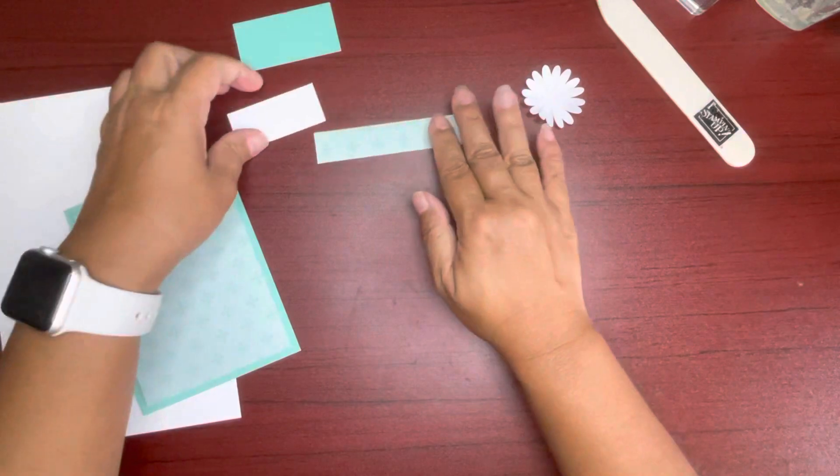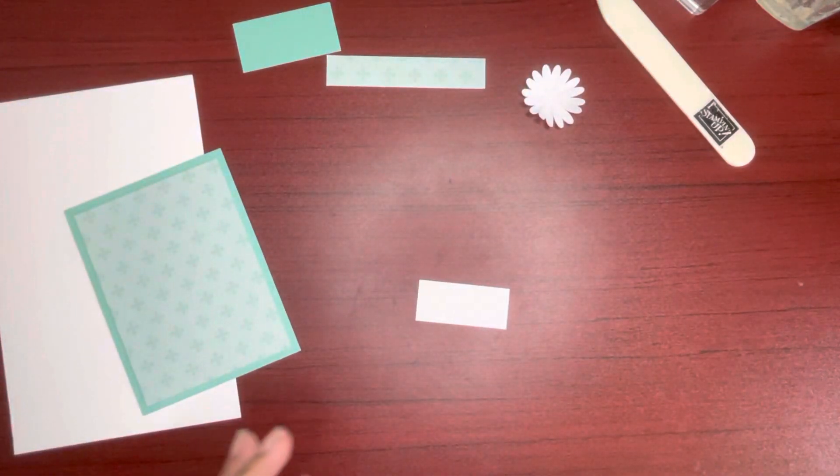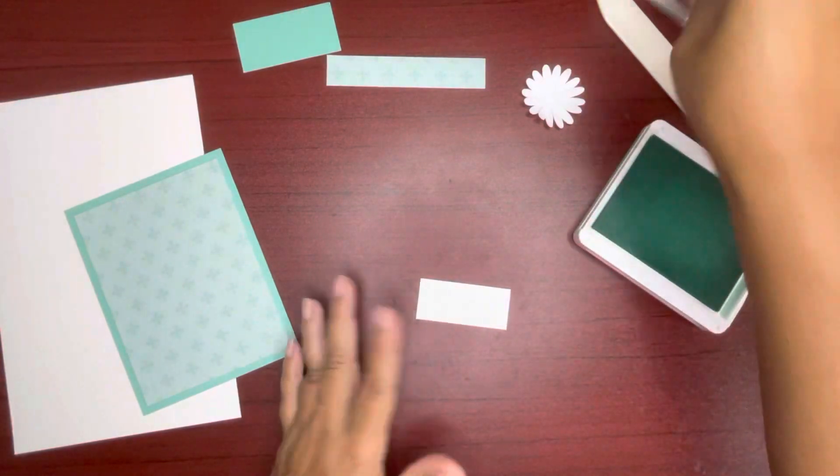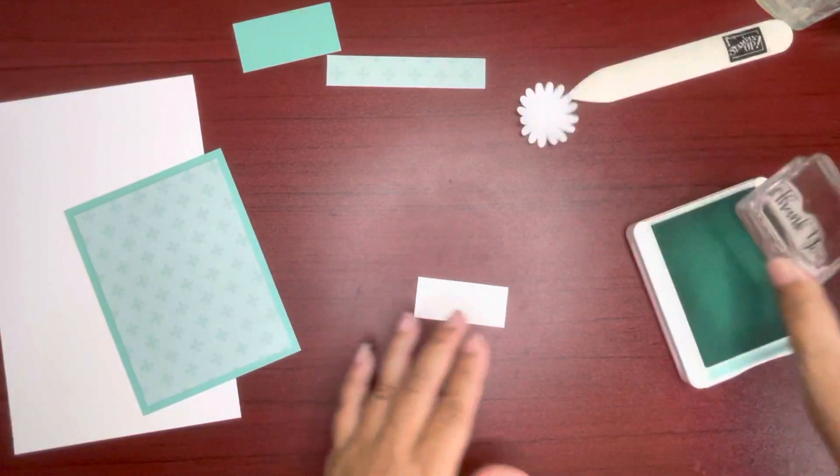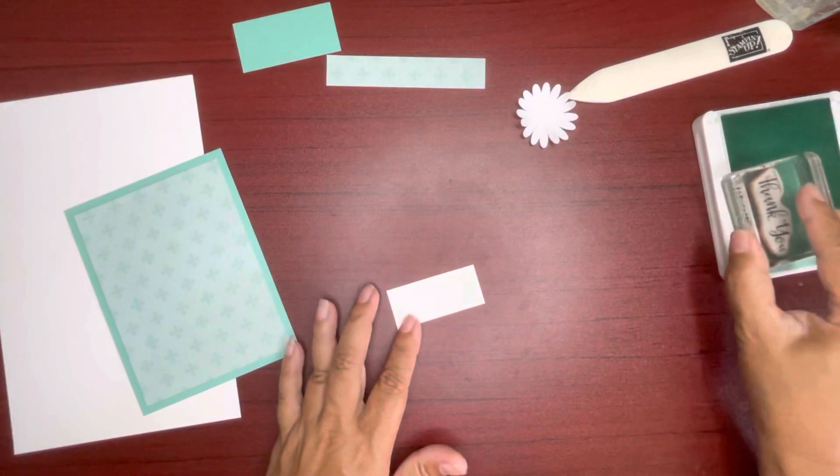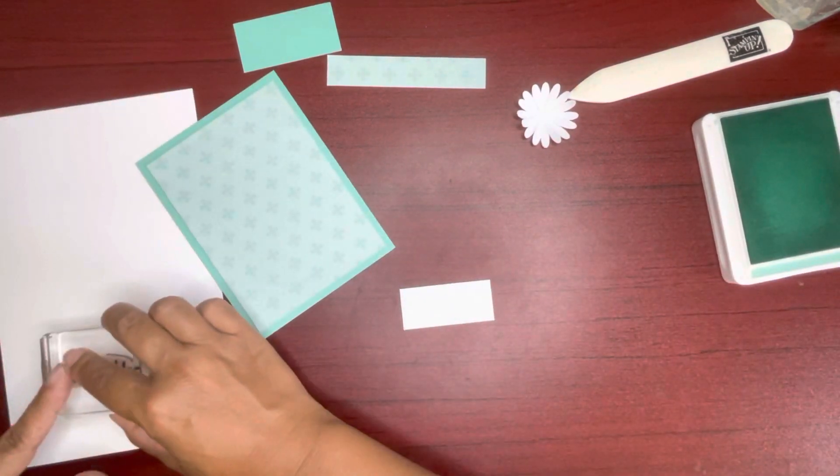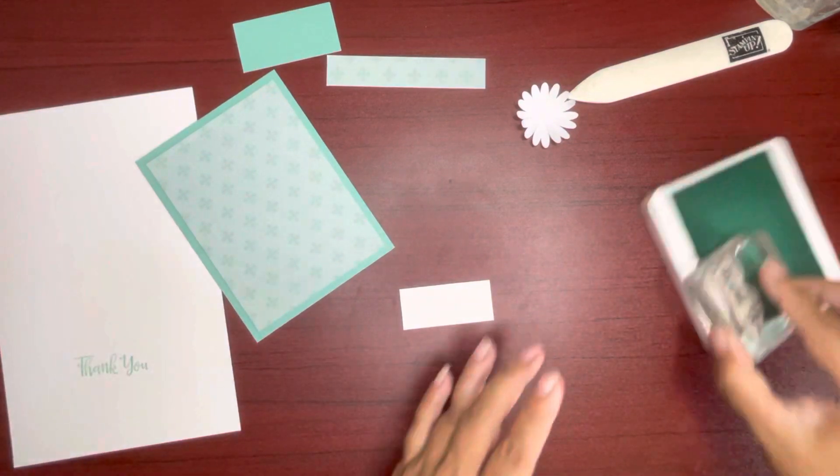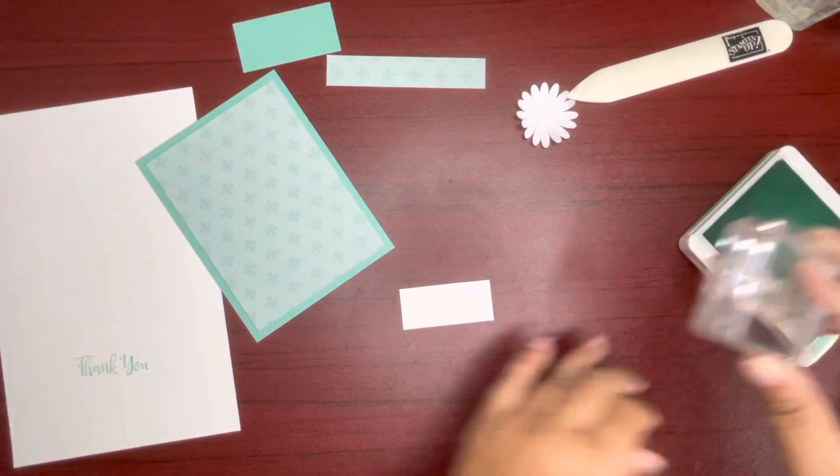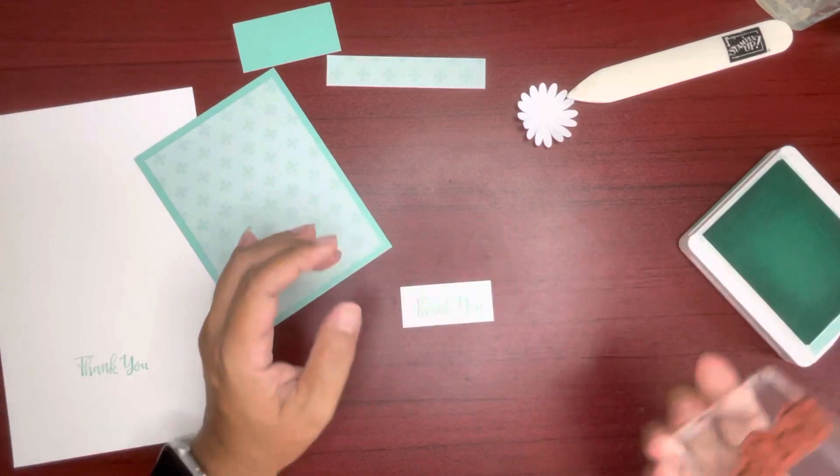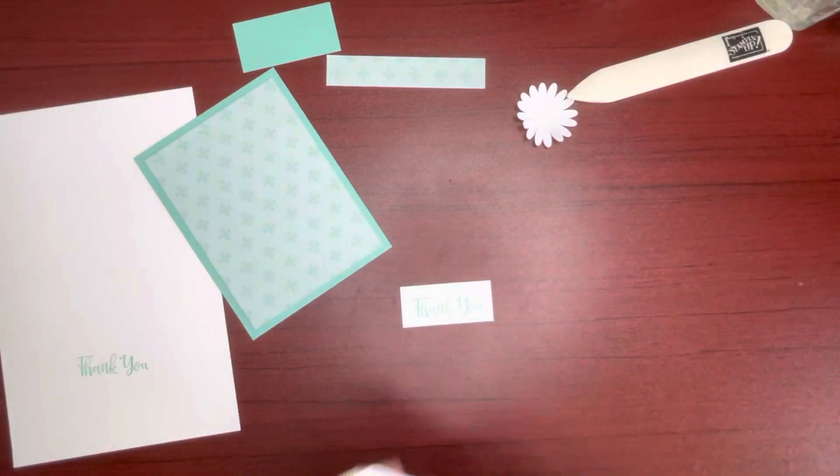And we can go ahead with our Coastal Cabana ink. Stamp our thank you. Oh, I think I need to re-ink this pad. Let's see what it looks like. It does need re-inking. I don't have the re-inker right next to me. There we go.